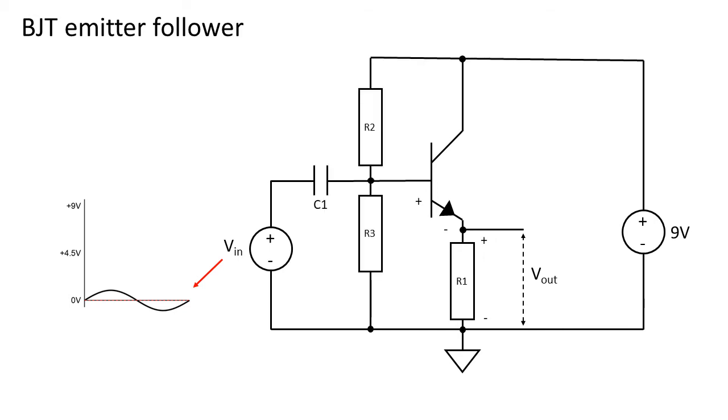We do this by adding C1 to capacitively couple the AC to the DC offset created by R2 and R3. The capacitor makes sure that the node at R2 and R3 can have a different DC level than the signal source.